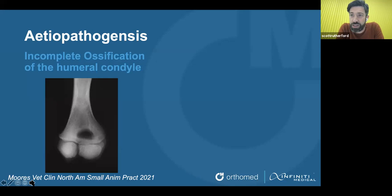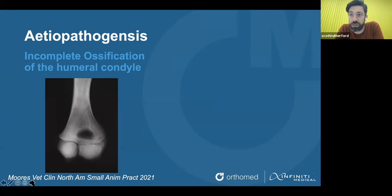Because this was seen in certain breeds, it was hypothesised that there was incomplete ossification. Normally, we see fusion of the medial and lateral condyles when a dog is aged 10 weeks, plus or minus 2 weeks — so between 8 and 12 weeks. This was described as IOHC, incomplete ossification of the humeral condyle, and was the major theory for many years. But then it started to be questioned.